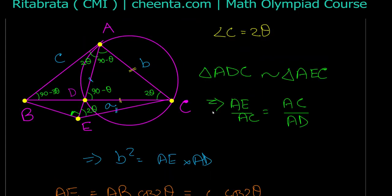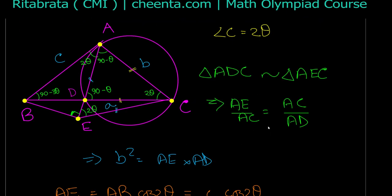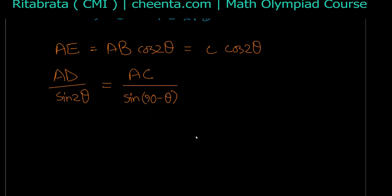To find AD, I use the sine rule on triangle ADC. We have AE / sin(2θ) equals AC / sin(90° − θ), which is b / cos(θ). Therefore AD equals b · sin(2θ) / cos(θ).